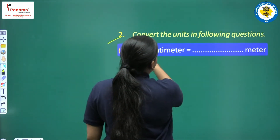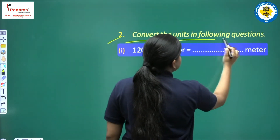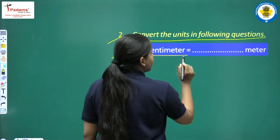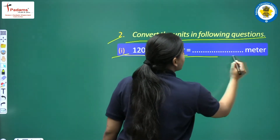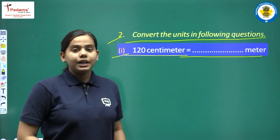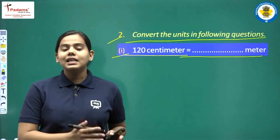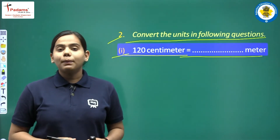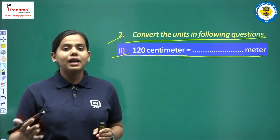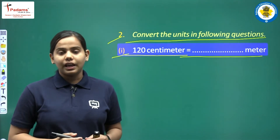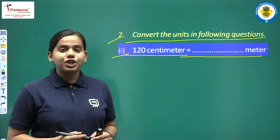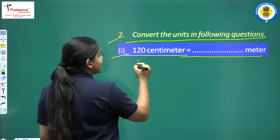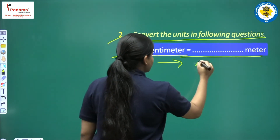Question 2: Convert the units in the following questions. First part: 120 centimeters equals dash meters. Here we have to convert centimeters to meters. Children, you know when we go from small units to big units then we use division. See, centimeter — we have to get a meter.